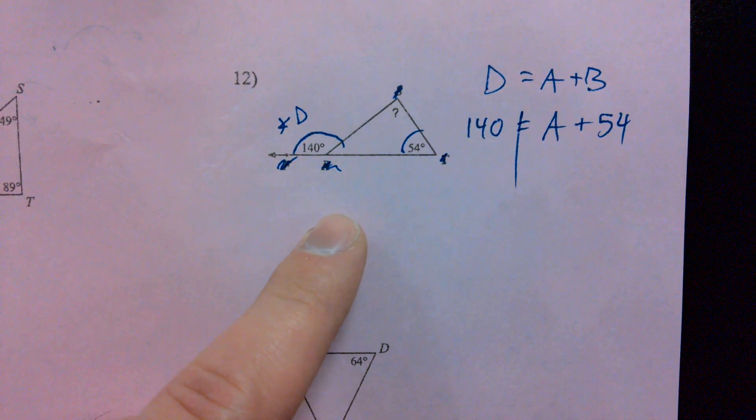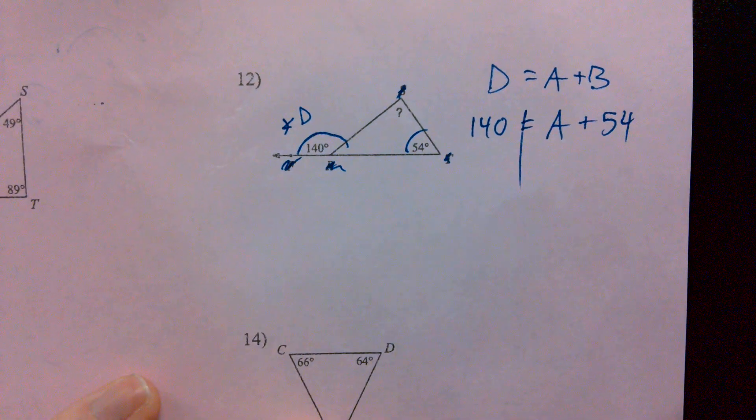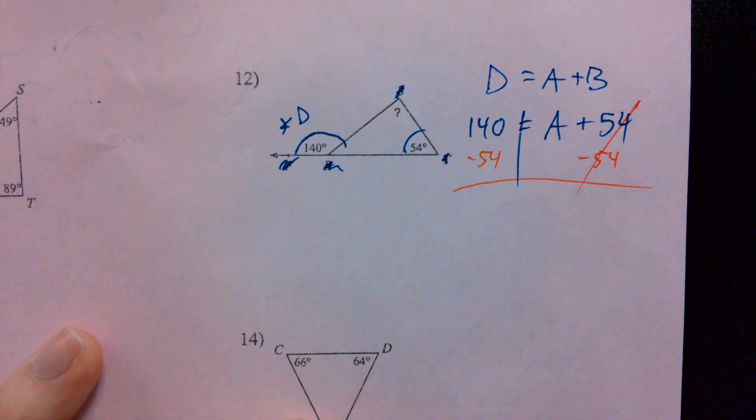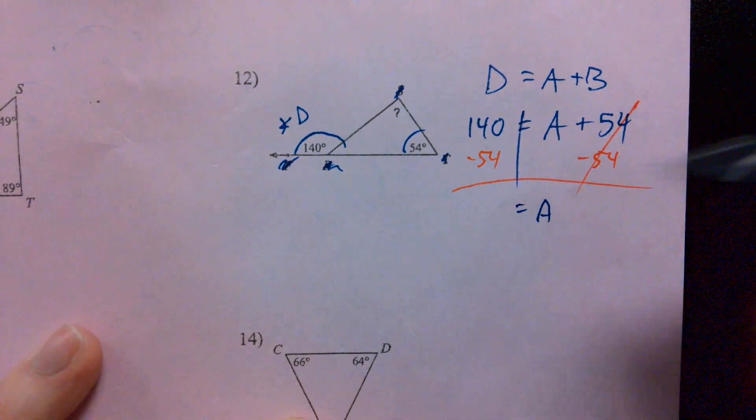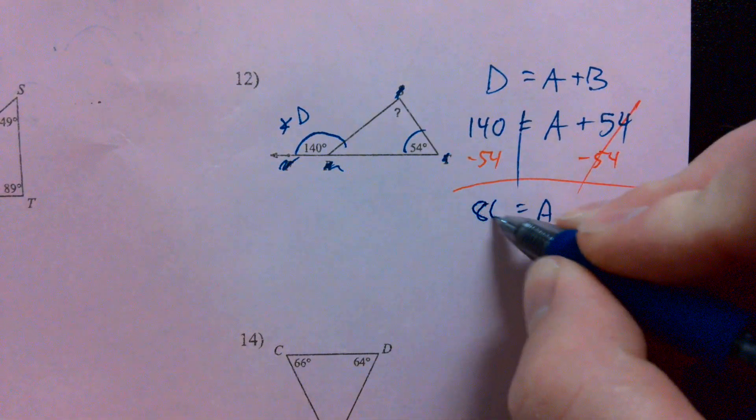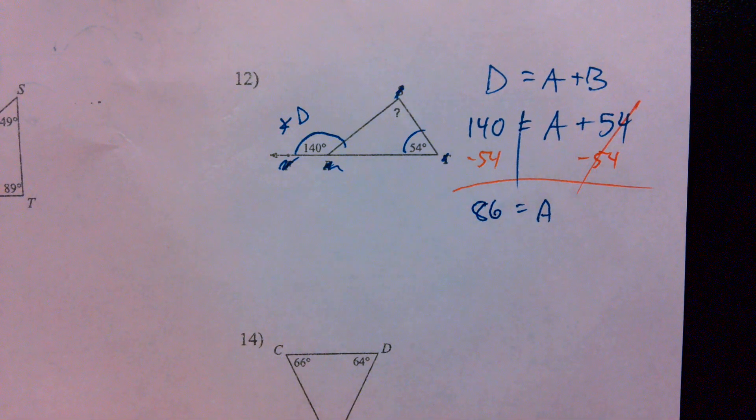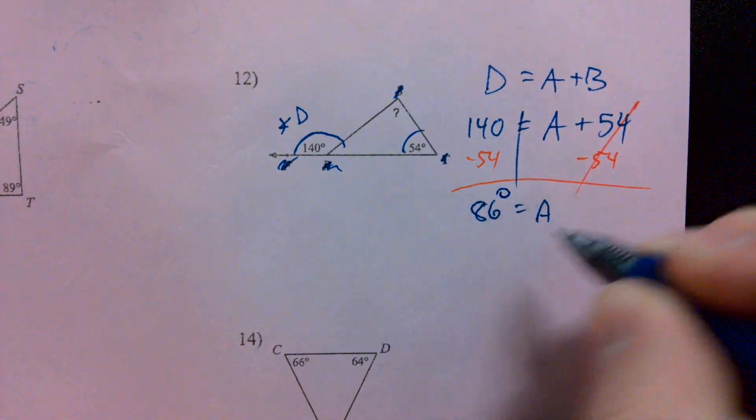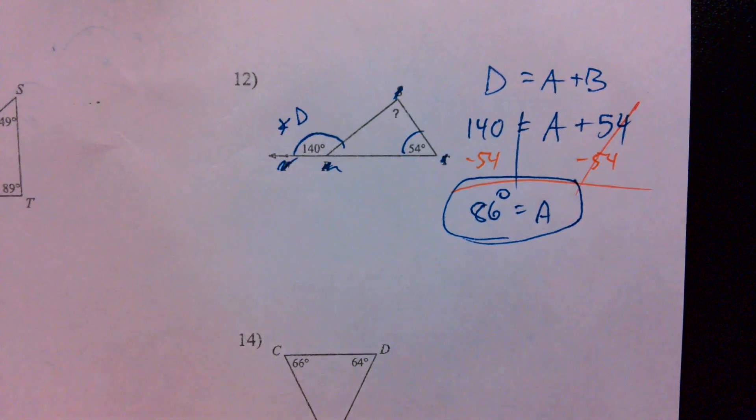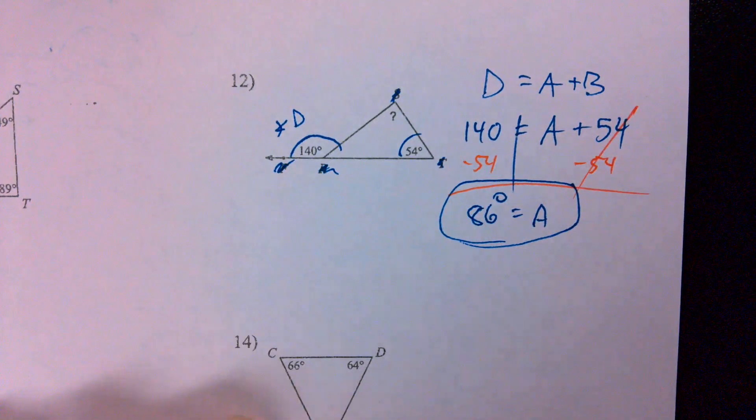How can I get A all by itself now? We just subtract 54. 54s go away. Now, my angle A is all alone. What's 140 minus 54? 86. Right? 130, 140. Yep, 86 degrees. And that's what we get there for angle A. So, my remote interior angle is 86. We can clearly see if we add 54 plus 86, we get that exterior angle, angle D.